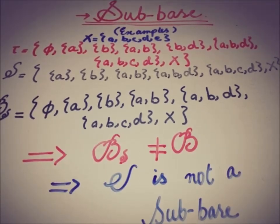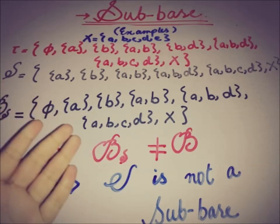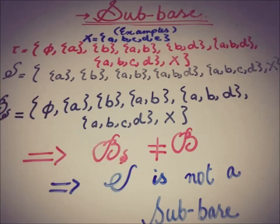Since BD cannot be formed, B_s is not a basis for topology tau. Therefore we can infer that the collection S is not a sub-base. This contrasts with the first example, where B_s was equal to a basis of the topology. In this case, S fails to be a sub-base.